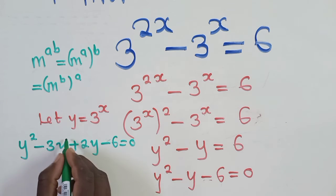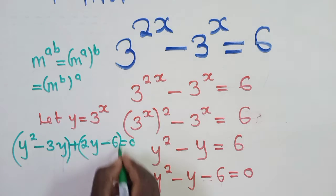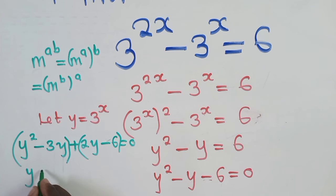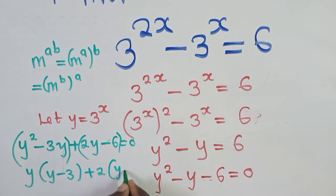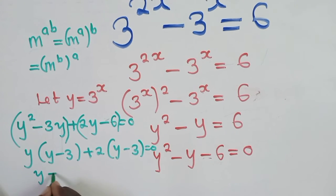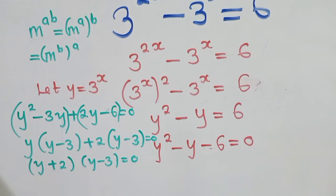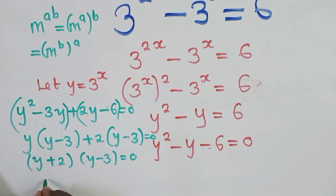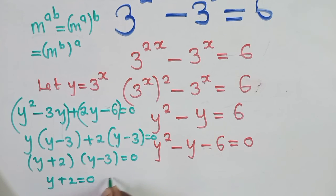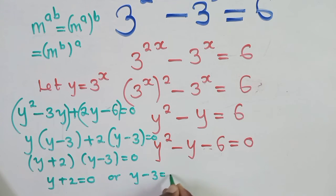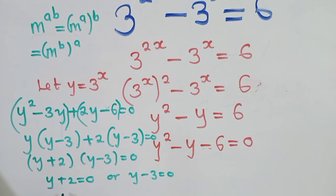We group the terms. What is common here is y, so we remain with y(y minus 3) plus 2(y minus 3) equals zero. Next we factor to get (y + 2)(y minus 3) equals zero. So either y plus 2 equals zero or y minus 3 equals zero.